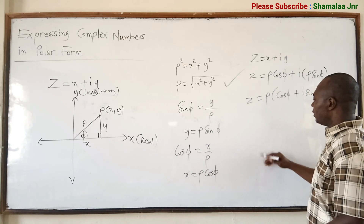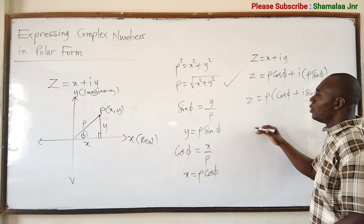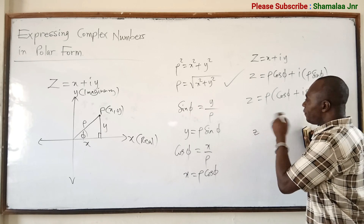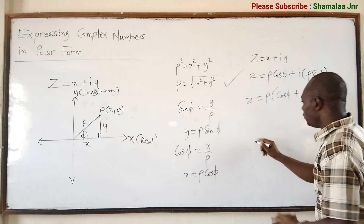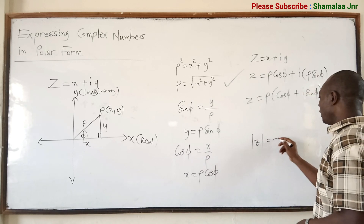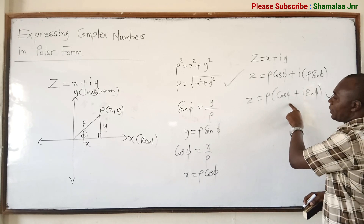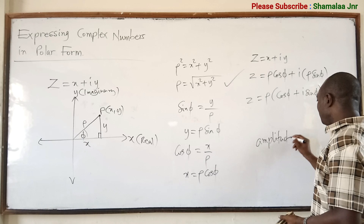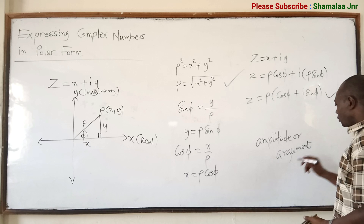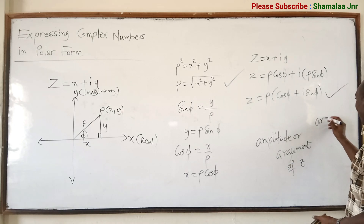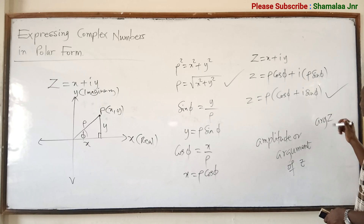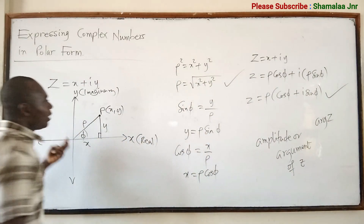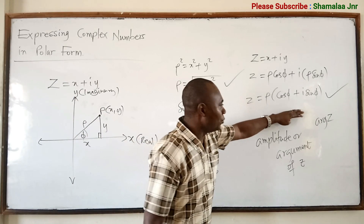This rho is known as the magnitude, or the modulus, or the absolute value of z — denoted |z|. The angle phi is referred to as the amplitude or the argument of z, written as arg(z). So when you see arg(z) it means the amplitude or the argument of the complex number z.